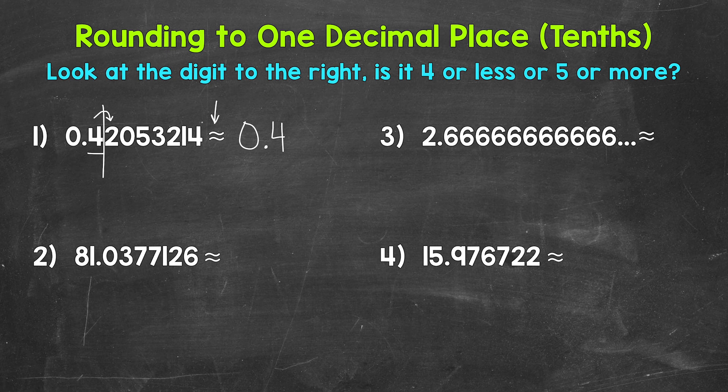Let's move on to number two, where we have 81 and then some decimal digits. There is a zero in the tenths, and then a three to the right in the hundredths. Three is four or less, so we stay the same. This rounds to 81 and zero tenths. Now 81 and zero tenths is equal to just 81, but I included that zero in the tenths place to show that we rounded to one decimal place, to the tenths place.